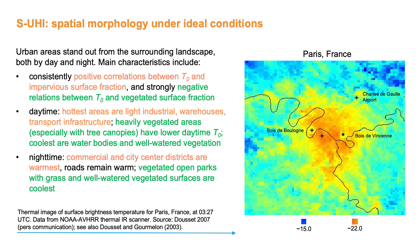Generally during daytime, the hottest areas are associated with light industrial areas, warehouses, transport infrastructure, whereas heavily vegetated areas, especially those with tree canopies, have lower daytime surface temperatures. And the coolest areas are those of water bodies and well-watered vegetation. During nighttime, the commercial and city center districts are warmest, roads also remain warm, and the vegetated open parks with grass and well-watered vegetated surfaces are coolest.